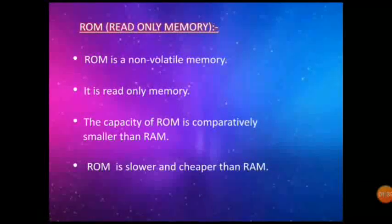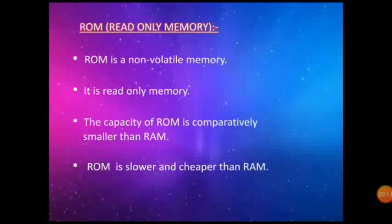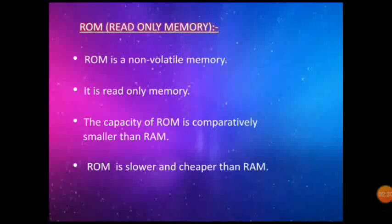The second example of primary memory is ROM — ROM stands for Read-Only Memory. Unlike RAM, ROM memory can't be directly accessed by the CPU. ROM is a non-volatile memory, meaning the data inside ROM is retained even if the power is switched off. It is read-only memory, meaning data in ROM can only be read by the CPU — that is why it is called read-only memory. The capacity of ROM is comparatively smaller than RAM, and ROM is slower and cheaper than RAM.